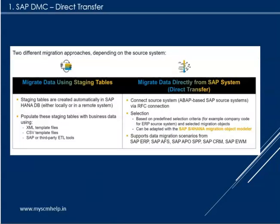In the data migration cockpit there are two ways to push data. One is using a staging table — similar to how LSMW or LTMC worked — where you prepare data in an Excel sheet and upload it to an ECC or S4 HANA system. In the migration cockpit you download a predefined template, populate it, and upload. The data first sits in a staging table and is then processed from there.